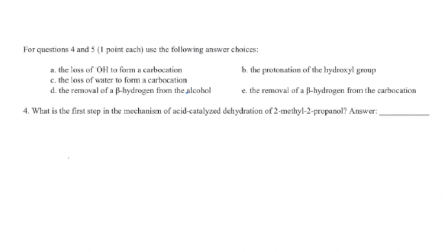We're going to move on to problems 4 and 5, which are one point each. Use the following answer choices. We've given the options A through E, but we want to know the first step in the mechanism of acid-catalyzed dehydration of 2-methyl-2-propanol.